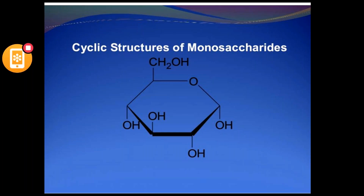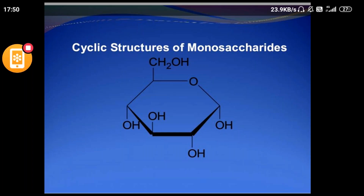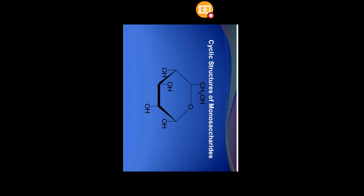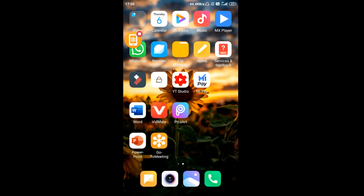For alpha sugar, the hydroxyl group is present on the right side; for beta sugar, the hydroxyl group is present on the left side. All right-side groups are written in the lower part and all left-side groups in the upper part. We will discuss further using more slides to confirm the alpha and beta forms.